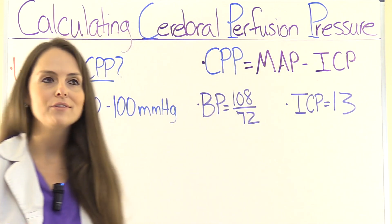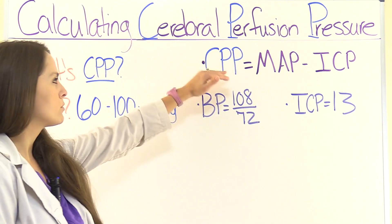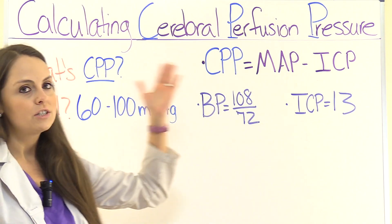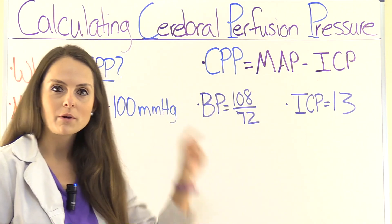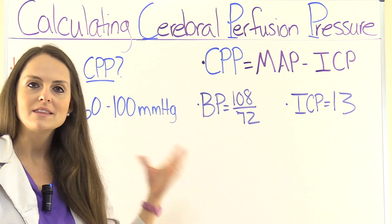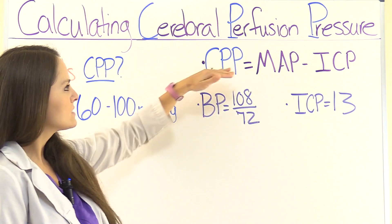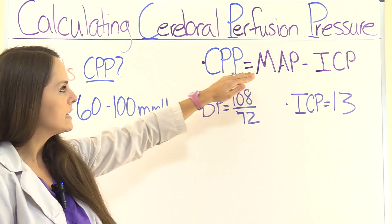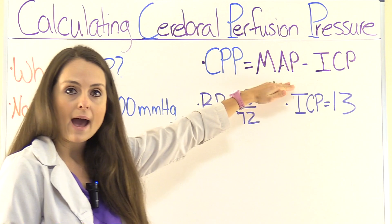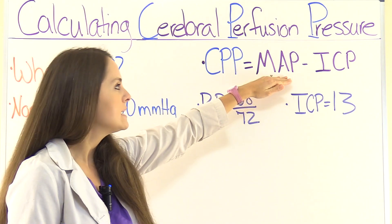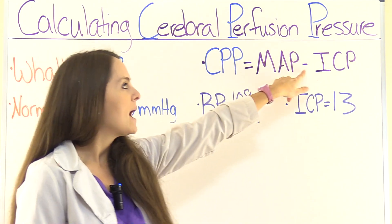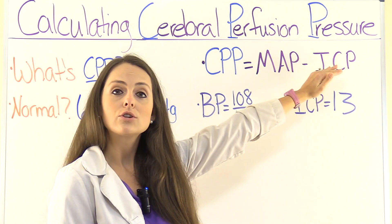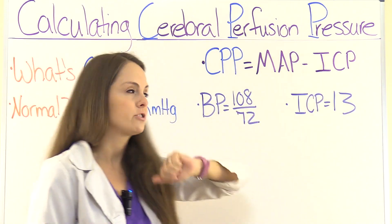So how do we solve for cerebral perfusion pressure? To do that, you want to remember this formula — I would commit this to memory. Cerebral perfusion pressure is equal to the MAP, which is the mean arterial pressure, minus the ICP, which is the intracranial pressure.